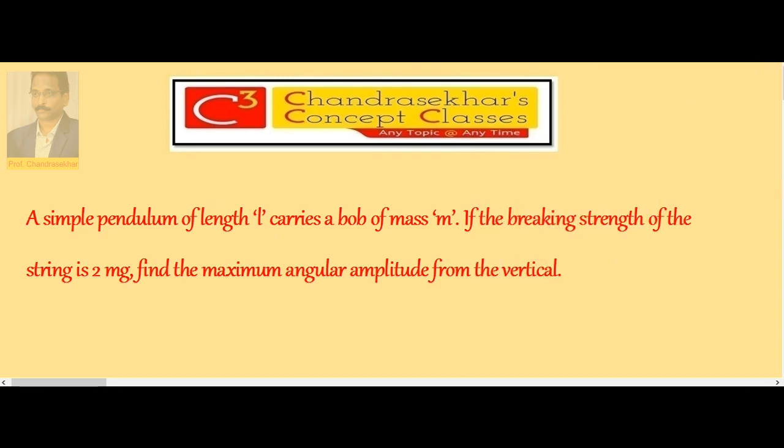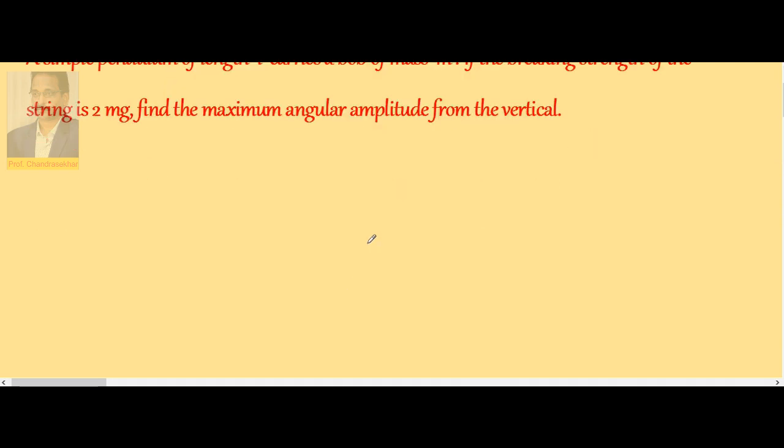So if I imagine an oscillating simple pendulum, say it is pulled and released, so it starts oscillating. Whether it is vertical circle or simple pendulum, tension is always maximum at the lowest point.